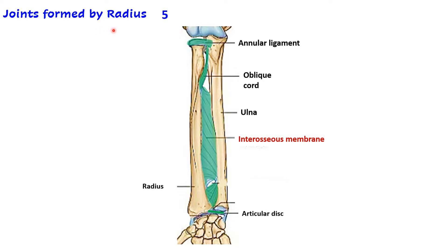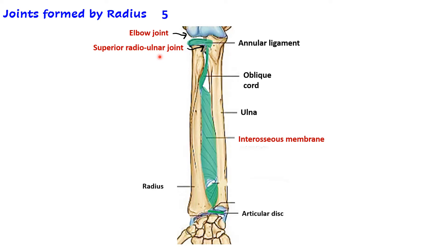What are the joints formed by the radius? In total it participates in formation of five joints. First is the elbow joint — the head of the radius articulates with the capitulum of the humerus to form the radio-humeral part of the elbow joint, which is a hinge type of joint. Then we have the superior radio-ulnar joint, seen between the head of the radius and a notch on the ulna along with the annular ligament.